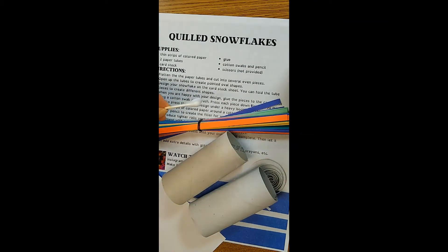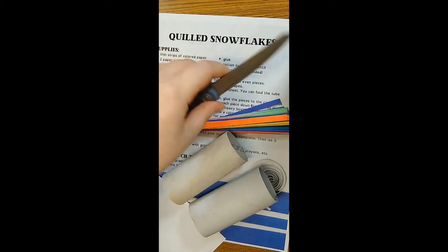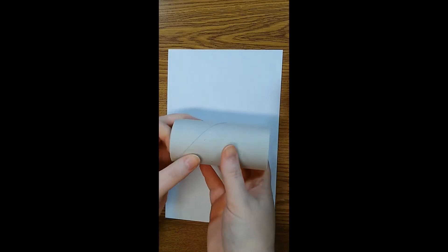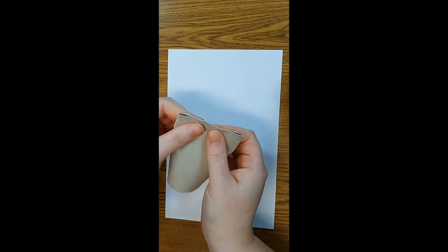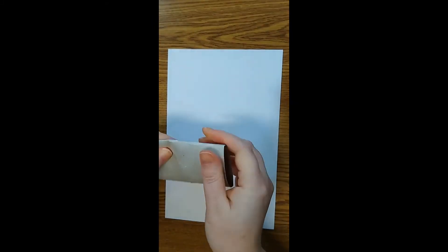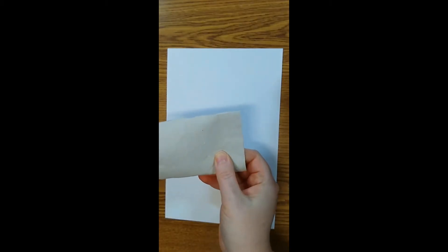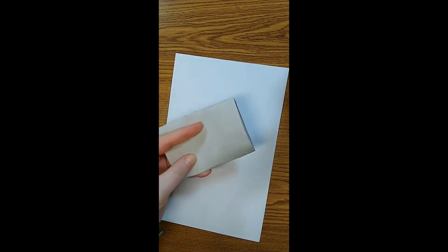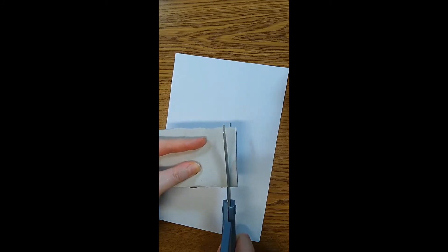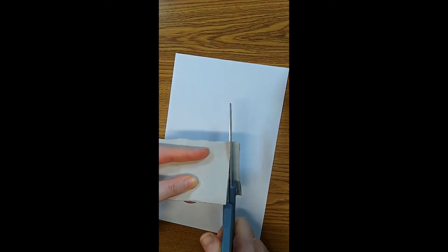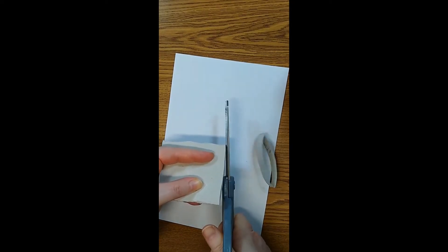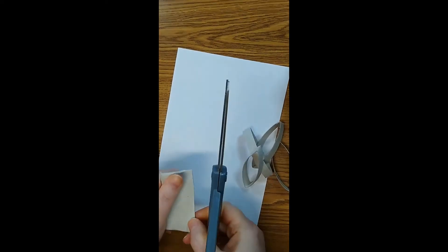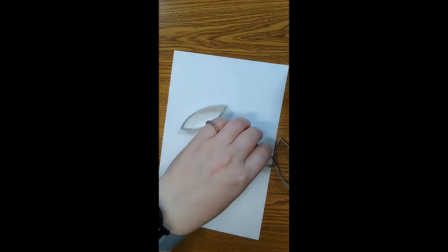You'll also want cotton swabs, and potentially a pencil and scissors - you'll definitely need the scissors. The first thing you're going to do is flatten your paper tube, so I'm just going to smush it down. Then take your scissors and you're going to cut your tube into even strips. If they're not 100% even that is okay, it just adds a little depth to your piece.